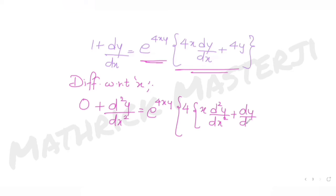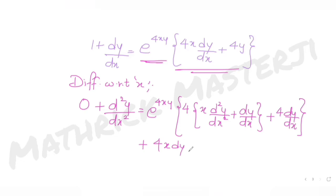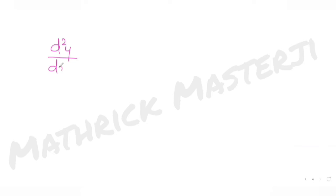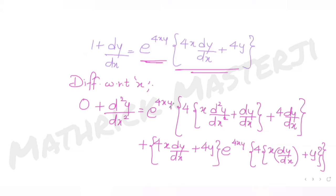Continuing, plus dy/dx plus 4·(dy/dx). That covers the first bracket. Then the second bracket — 4x·(dy/dx) + 4y — multiplied by the derivative of e^(4xy), which is e^(4xy) times the derivative of 4xy, giving e^(4xy)·(4x·(dy/dx) + 4y).